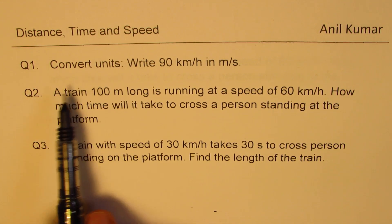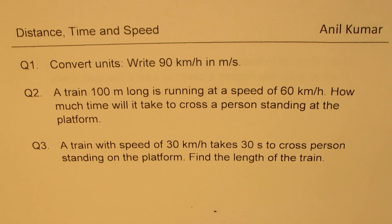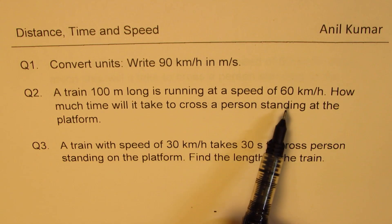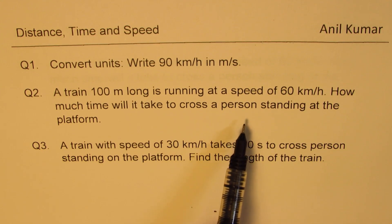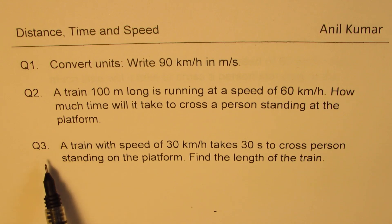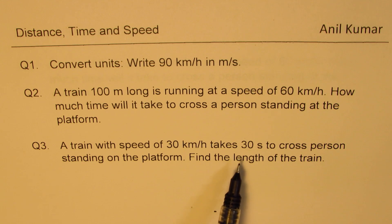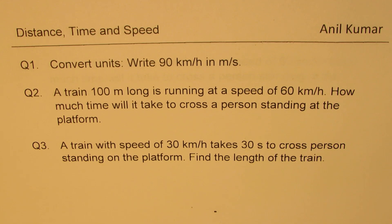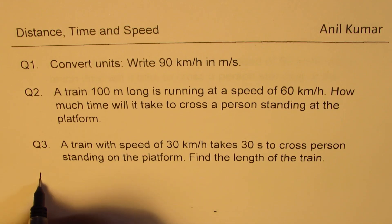Question one is to convert units: write 90 kilometers per hour in meters per second. Question two: a train 100 meters long is running at a speed of 60 kilometers per hour — how much time will it take to cross a person standing at the platform? Question three: a train with a speed of 30 kilometers per hour takes 30 seconds to cross a person standing on the platform — find the length of the train.